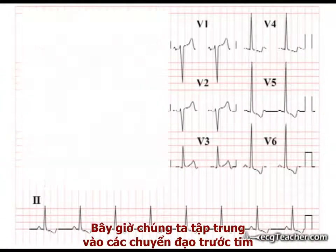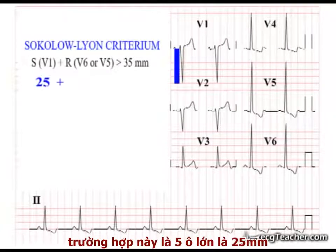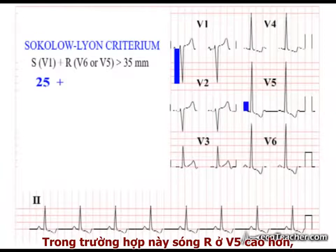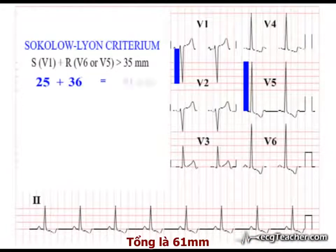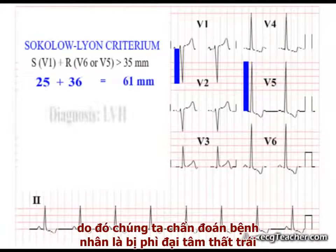Now we focus on the chest leads and note the depth of the S wave in V1 — in this case 5 large squares, or 25 mm — and the height of the R wave in lead V6 or V5. In this particular case, the R waves in V5 are tallest at just over 7 large squares, or 36 mm, giving us a total of 61 mm, well over our 35 mm limit. As the criterion is satisfied, we diagnose LVH.